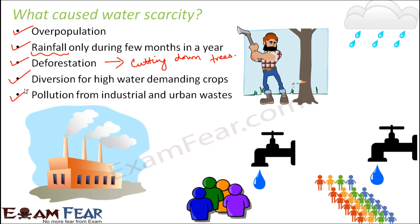These are some of the major causes of water scarcity. Looking at these causes, we observe that if we each do our bit, we will be able to control water scarcity. We can try to utilize water in the best possible way, stop wastage of water, try to control population, avoid deforestation, and plant more and more trees. We can do a lot of things to control water scarcity, and we will look at them a little later.